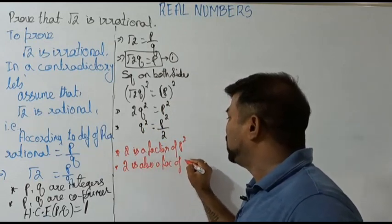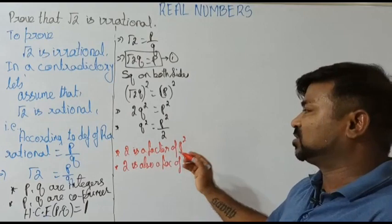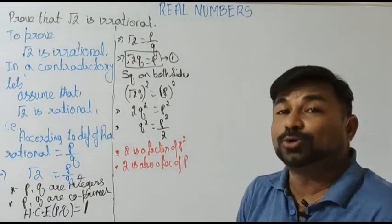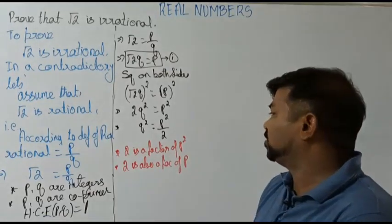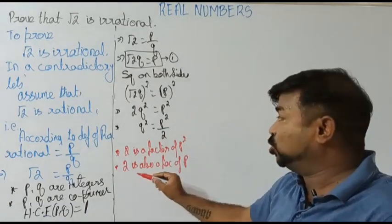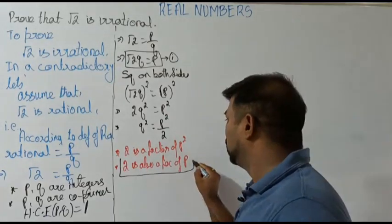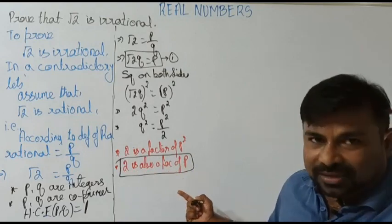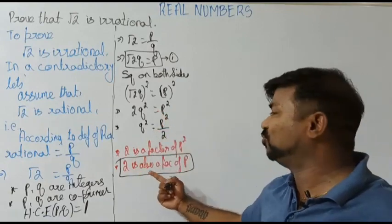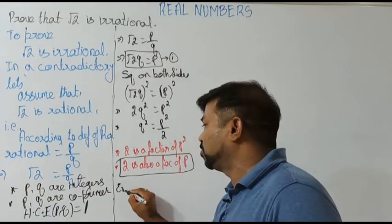Then this implies 2 is also a factor of p. We can say: 2 divides p² implies 2 divides p. Therefore 2 is a factor of p.